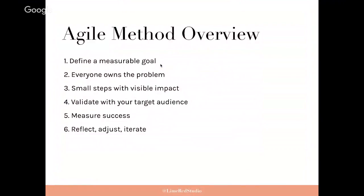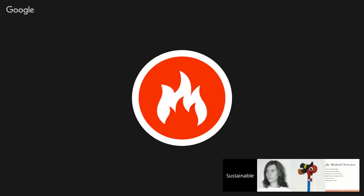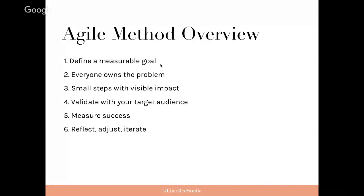For those who don't know what Agile Method — capital A, capital M — is, these are the six principles: Define a measurable goal, which makes a lot of sense. Everyone on the team owns the problem — it's not just a developer problem or a design problem, it's everyone's hands in all the time. You make small steps of visible impact, which is probably my favorite thing about Agile — you're making iterative changes and launching as you go, not trying to make a big dog-and-pony show like you would with Waterfall. And you validate and test everything you do all the time.